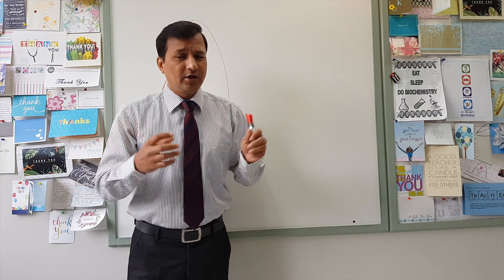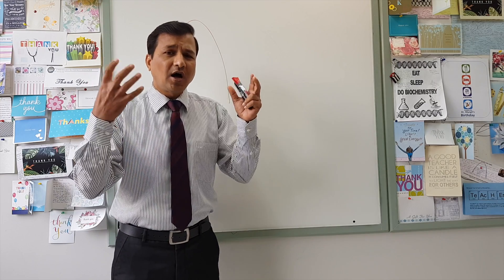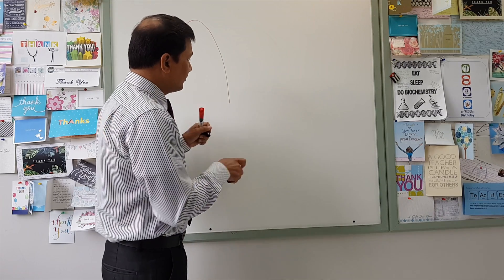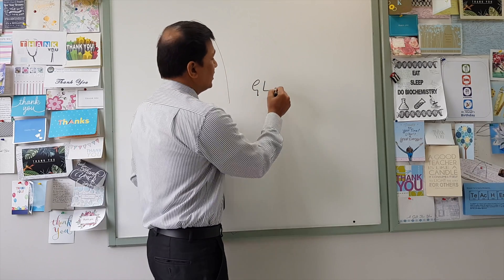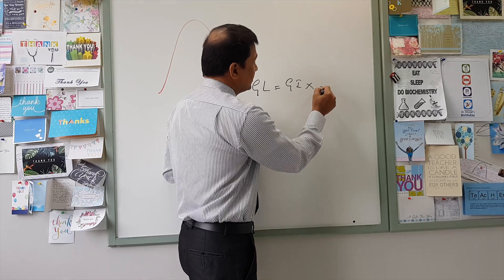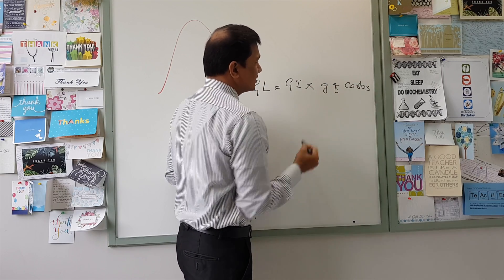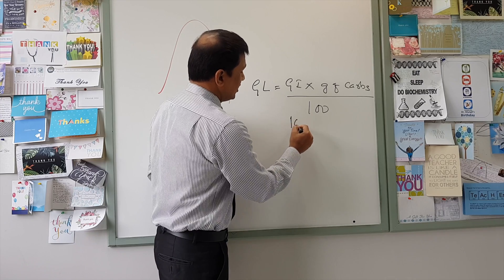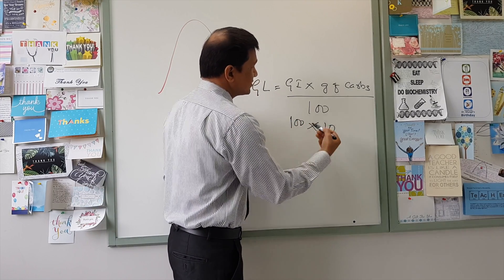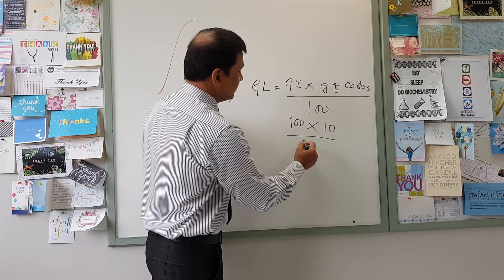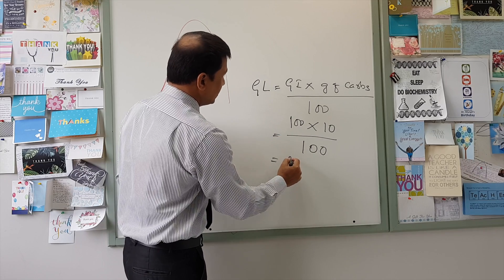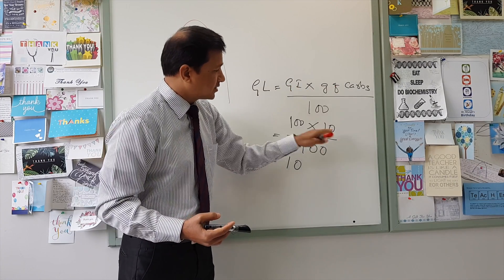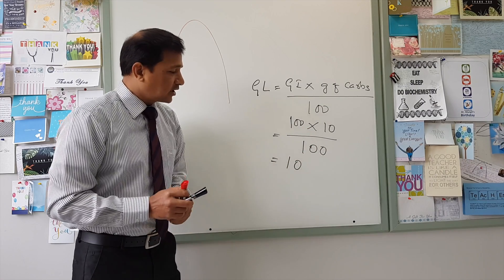Now let's talk about glycemic load. The glycemic load is the measure of the amount of carbohydrate taken in the food along with the glycemic index of that particular food. We calculate glycemic load (GL) as: glycemic index multiplied by the grams of carbohydrate in that particular food, divided by 100. So if the glycemic index is 100 like pure sugar, and if you take 10 grams of that pure sugar — 100 multiplied by 10 divided by 100 — the glycemic load will be 10.